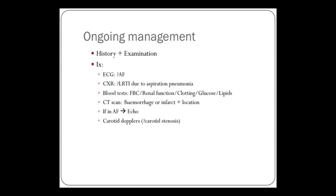Ongoing management involves trying to establish a cause. You investigate to look for AF — do an ECG. Chest X-ray: could the patient have had a chest infection as a result of aspiration pneumonia due to a problem with their swallow? Blood tests: full blood count, renal function, clotting, glucose, and lipids — particularly looking at vascular risk factors. The CT scan, which you need to do urgently, is to try to distinguish whether the patient has had a hemorrhage or not. And carotid dopplers to look for carotid stenosis.